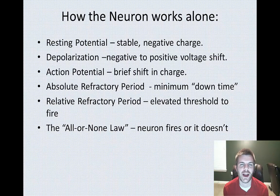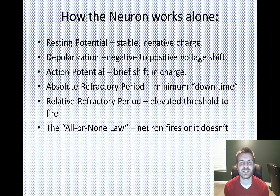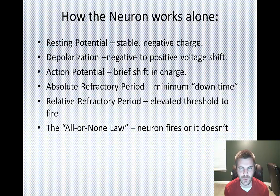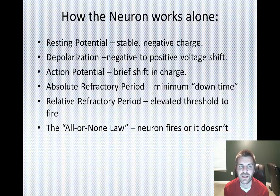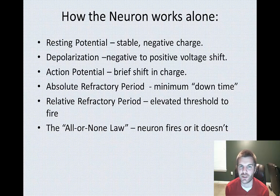Now let's look at how the neuron works by itself. Inside the axon, you have a bunch of fluid filled with negatively charged ions. This creates a stable state called the resting potential. For any chemical messages to be transmitted, the axon must experience depolarization — this means that briefly the resting potential will switch into a less negative or even positive charge, causing an action potential. The action potential is what's needed to help pass along this impulse and release neurotransmitters.